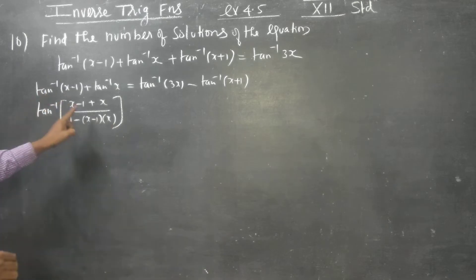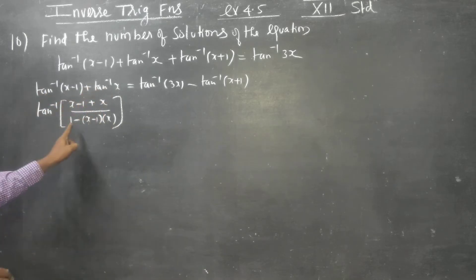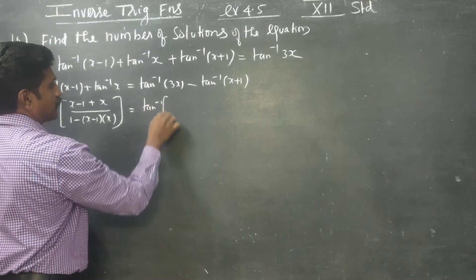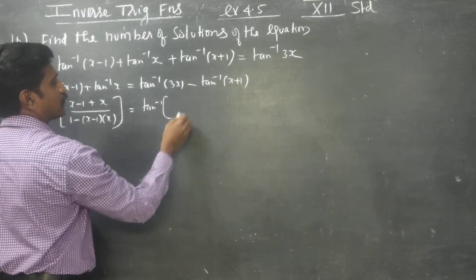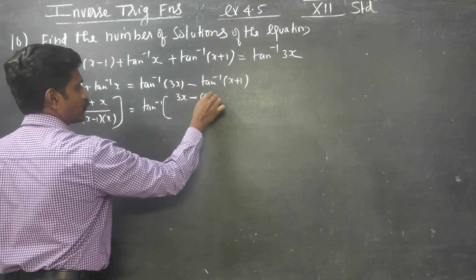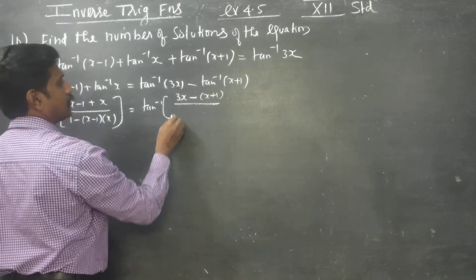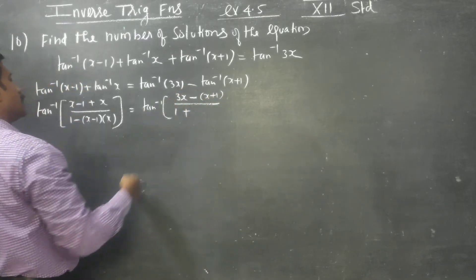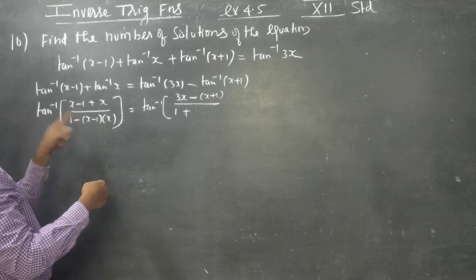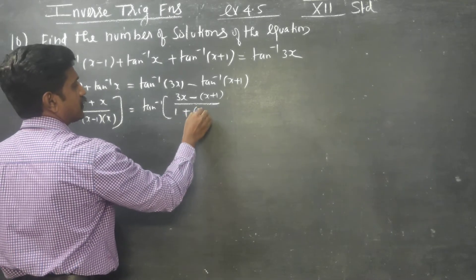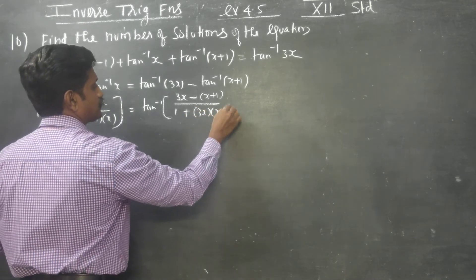Applying the formula, tan inverse of (x minus y) gives (x minus y) divided by (1 plus ...). Starting with the left side: the numerator is (x minus 1) plus x, and on the right side the terms involve 3x and (x plus 1).